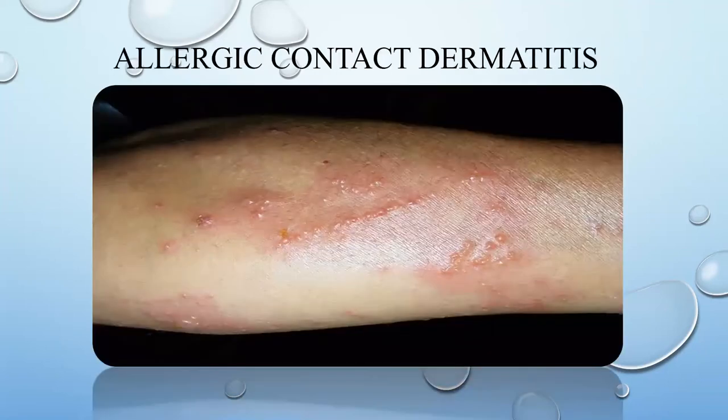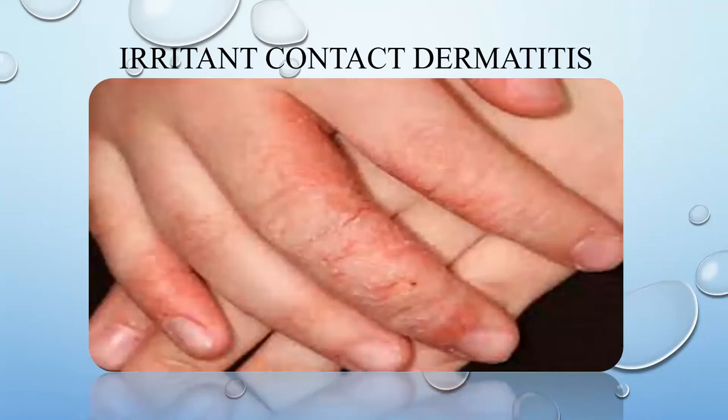This picture shows allergic contact dermatitis. We can see the blisters, the redness, and also the lesions caused by scratching due to the itchiness. The next one is a classic picture of irritant contact dermatitis. We can see the redness in the hands.